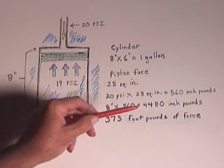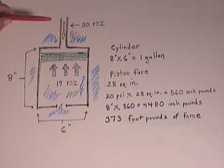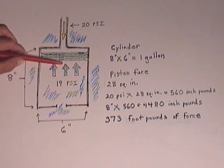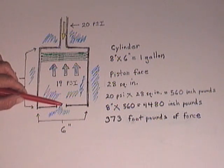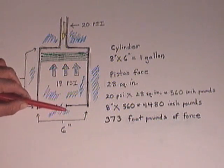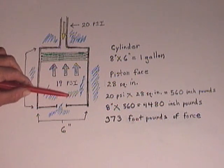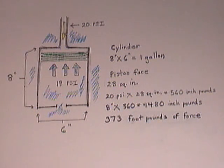373 foot-pounds of force in total is required to drive the piston down to the bottom of the cylinder and drive out all the water so it can be replaced by air and then rotate upwards.